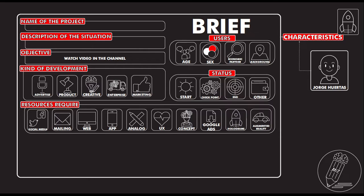After that, we need to select which resources we are going to use: social media, mailing, web, app, analog, UX. We may need to develop a concept, purchase ads on Google Ads or other platforms, use holograms, or augmented reality. Here we can have one resource or many. It's very important that we know what resources we need from the beginning.